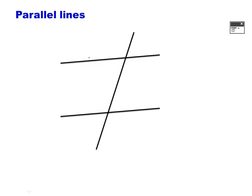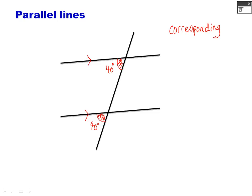Again with parallel lines — shown by arrows. If we have an angle of 40 degrees here, we know that this angle on the other parallel line is also 40 degrees, because they are in the same position on each intersection — in this case both at the bottom left. These are called corresponding angles. They're in the same place but on a different part of the cross, and they're always the same.